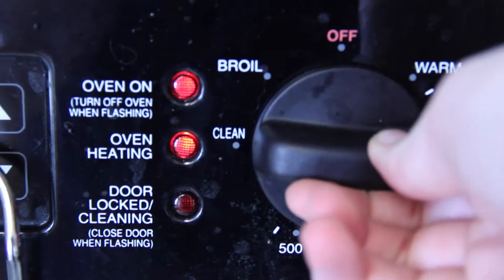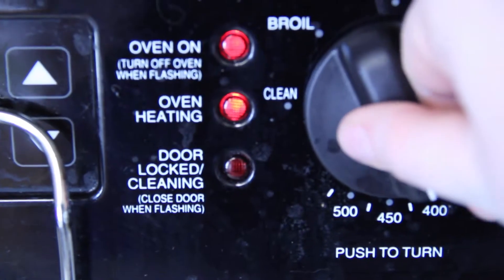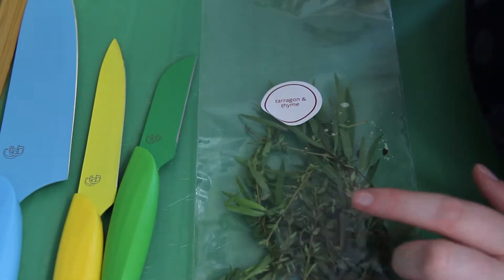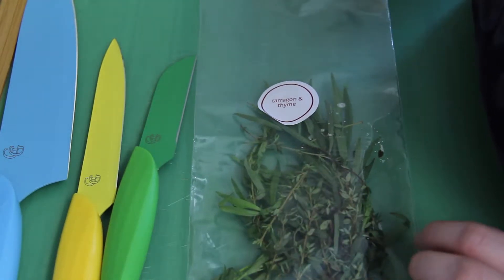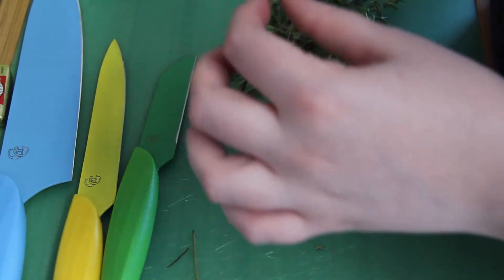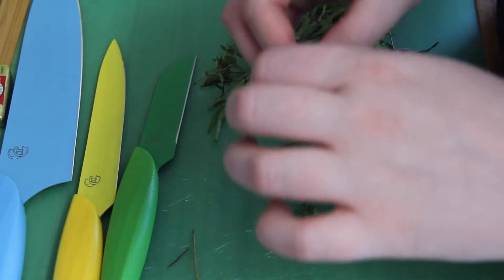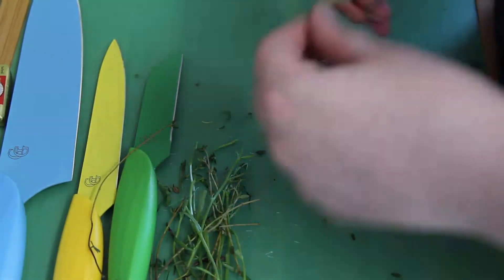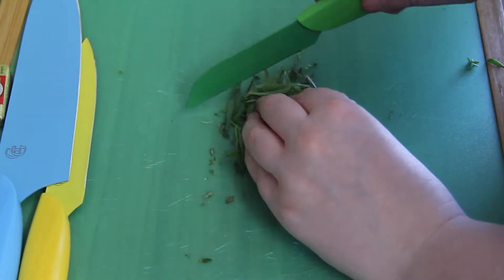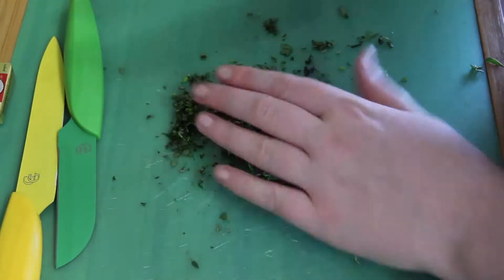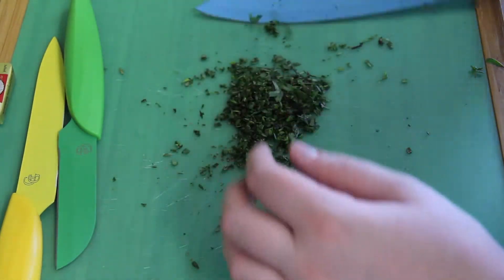Preheat the oven to 425. So taking the tarragon, you're going to take the leaves off of it and then finely chop it. You want to make sure you have no stems because nothing is worse than choking on stems while eating. Chopping this up into fine pieces. Once you finely chop it, put it aside for later on.